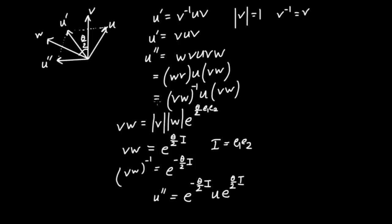The angle of rotation from u to u double prime is theta — double the angle between the two reflecting vectors. So we have experience composing reflections to generate rotations in the plane, generating these double-sided transformation laws. This is how I'd like you to think of rotations in general: as occurring through a double-sided transformation law. In the special case where the vector being transformed is in the same plane as the bivector, we can rewrite this as a single-sided transformation: u times e to the (theta · i). But in general, think of the double-sided law.